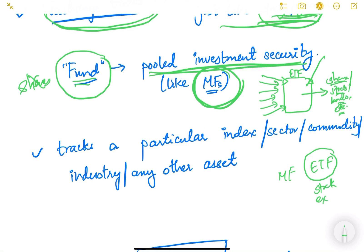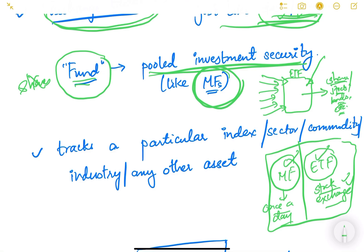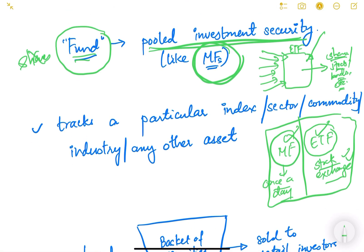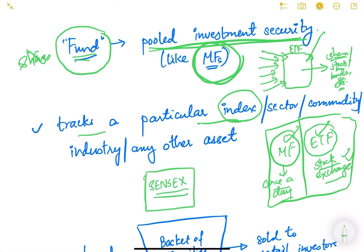The key difference between a mutual fund and an ETF is that the ETF is traded on the stock exchange continuously throughout the day, whereas mutual fund settlement happens only once a day after markets close. Otherwise, practically they are the same. Exchange traded funds also track a particular index — for example, the Sensex. The portfolio may be designed so that whatever movement happens in Sensex, the same or similar convergent movement happens in that ETF as well.